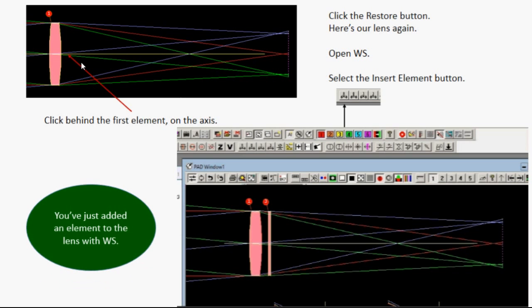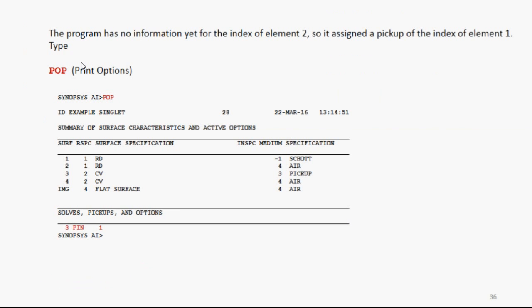But the program has no information yet for the index of that new element. So it assigned a pickup of the index of element 1. But we don't want that. We have to get rid of that. If you type POP in the command window, you'll see a list of print options. You'll see Surface 3 has a pickup index of Surface 1. So we have to get rid of that, and there are a bunch of ways to do that.